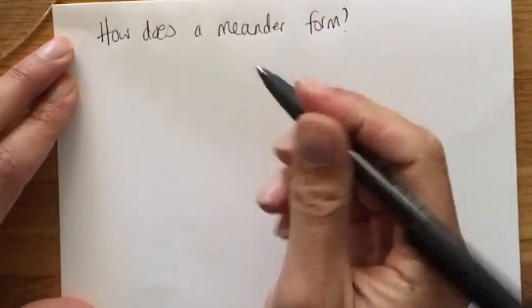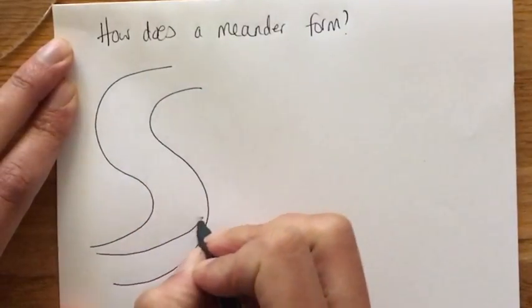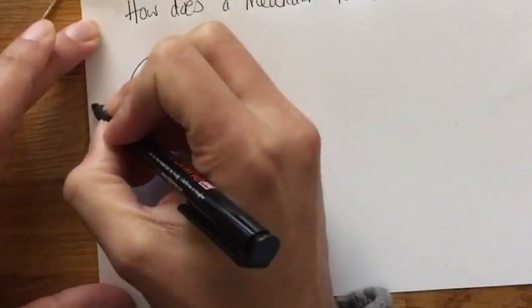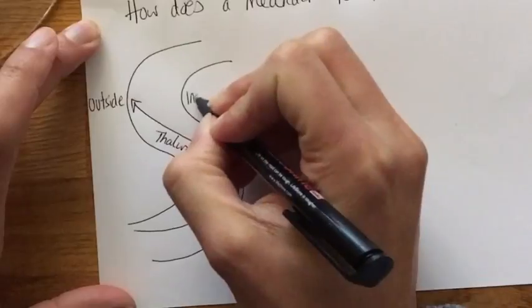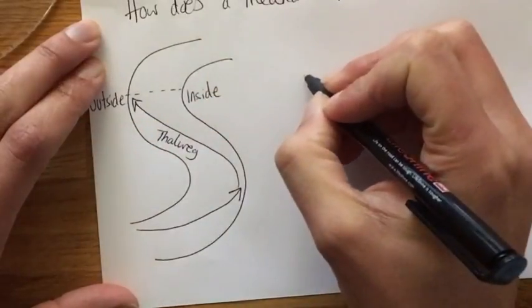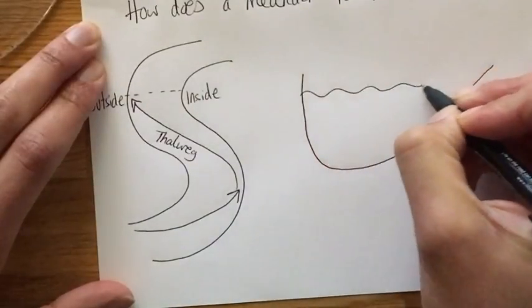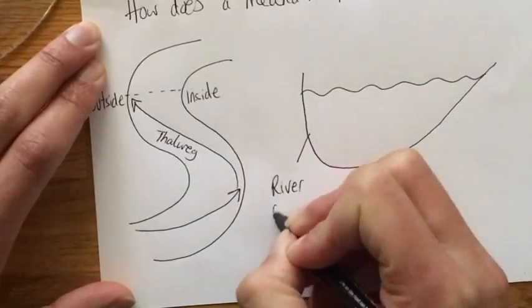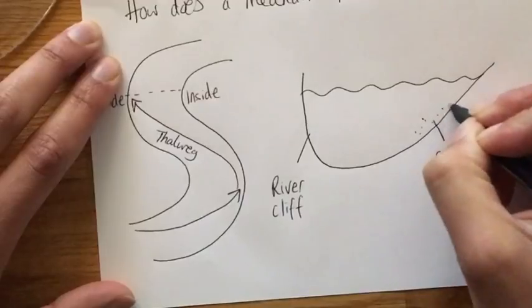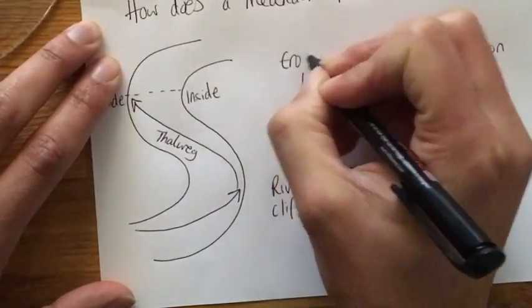Here's a quick reminder of how a meander forms. A meander is a bend in a river and when water flows through it, it flows towards the outside bend — the river's fastest flow is called the thalweg. So on the outside bend we have more erosion and on the inside bend we have more deposition. If we draw a cross section of the river it would be much deeper on the outside forming a river cliff, and much shallower on the inside forming a slip off slope. On the inside bend there's deposition, and on the outside bend there's more erosion.